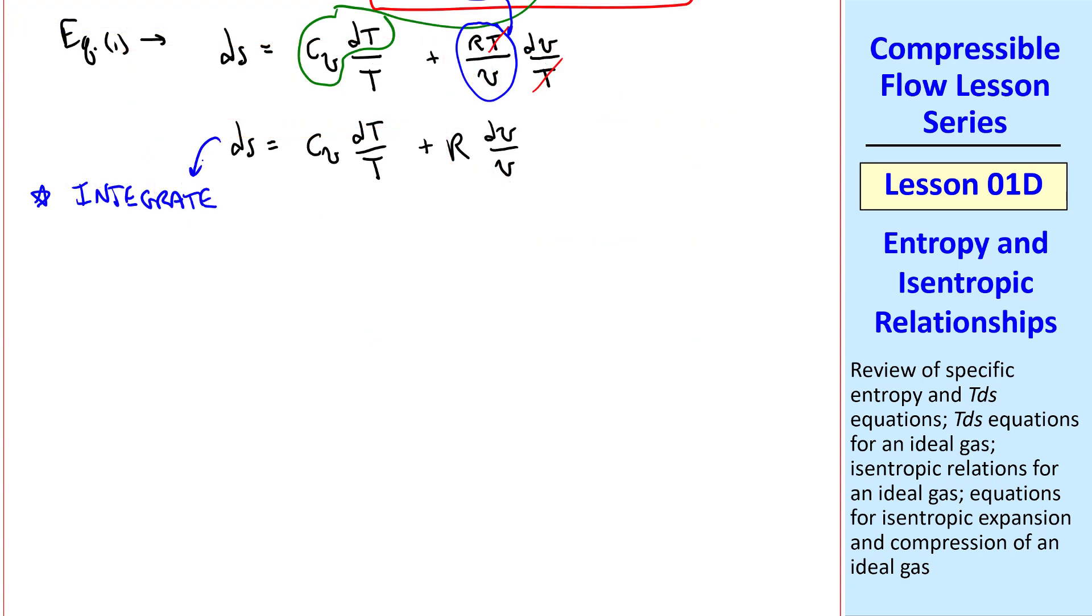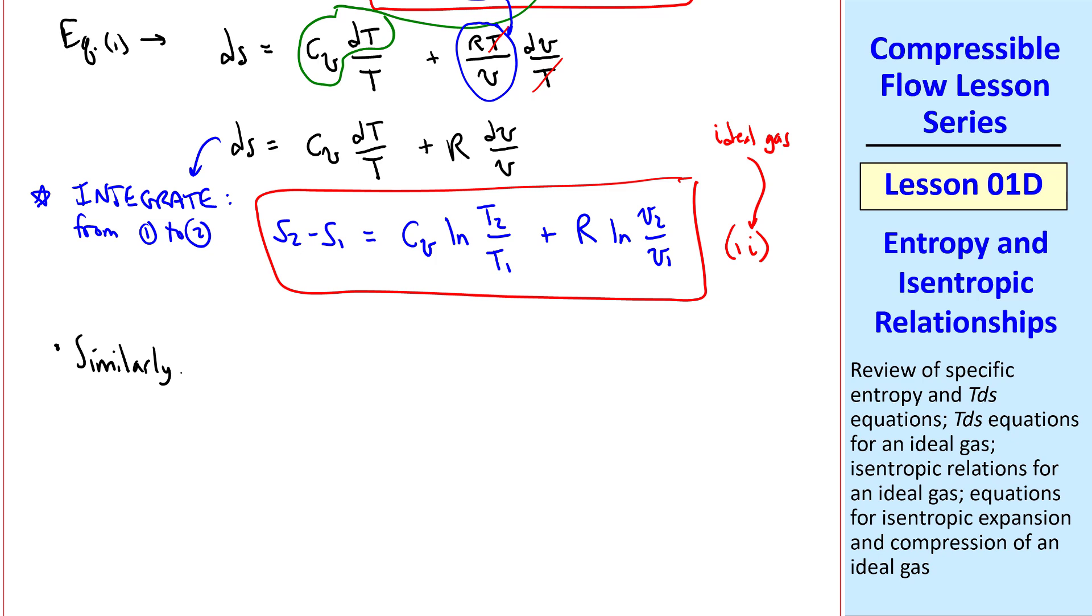Now let's integrate. Since s is a state variable, the integral is simply s2 minus s1, when we integrate from state 1 to state 2. And these two terms become natural logs when we integrate. cv is just a constant, we get natural log of t2 over t1, plus r natural log of v2 over v1. I'll call this equation 1i. So this is the first TDS equation, with the i indicating an ideal gas.